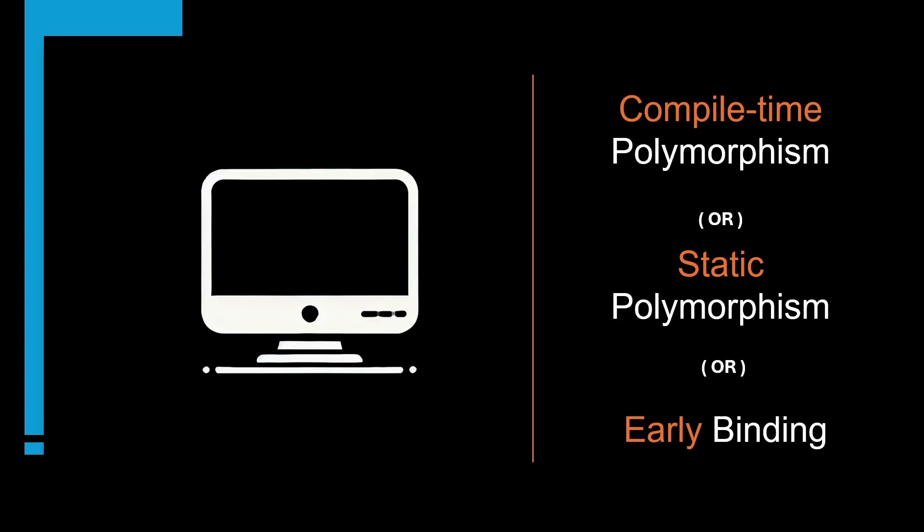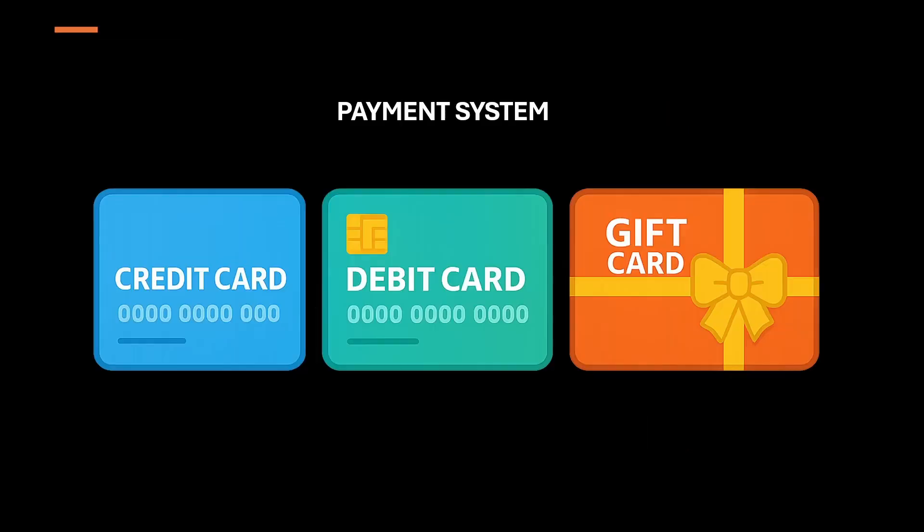Compile-time polymorphism is a key concept that allows us to define multiple methods with the same name, as long as their number of parameters, data types, or sequence of parameters are different. To understand this, imagine you're building a payment system for an online store where customers can pay using a credit card, debit card, or gift card. Let's implement this without polymorphism first, then apply it to see the value it adds.